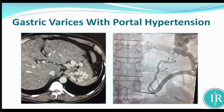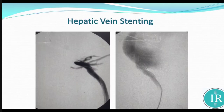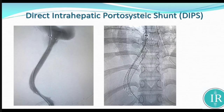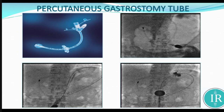Gastric varices: in a patient with cirrhotic liver, portal hypertension, and rectal bleeding, if the gastroenterologist cannot manage the continuous bleeding, we perform a transjugular intrahepatic portosystemic shunt, known as TIPS. Similarly, for young patients with IVC block or hepatic vein block causing portal hypertension, we can create a direct intrahepatic portosystemic shunt. BRTO is also available for the same indication. Additionally, for patients where endoscopy is not possible due to esophageal stricture, we can place a percutaneous radiological gastrostomy tube directly.